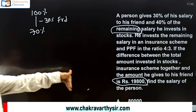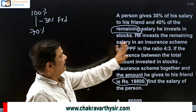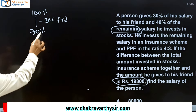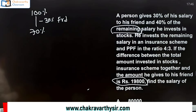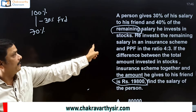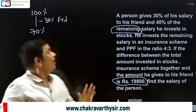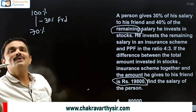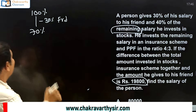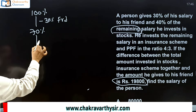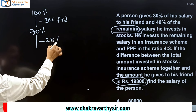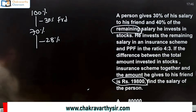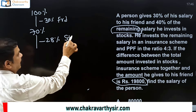Now the next condition: 40% of the remaining salary he invests in stocks. The remaining is 70% now. From this 70%, 40% of the remaining salary goes to stocks. What is 40% of 70%? Very simple — seven fours are 28. So 40% of 70 is 28%. He invested 28% in stocks.